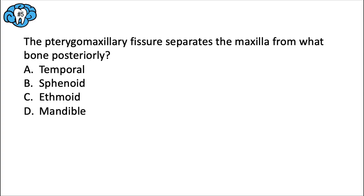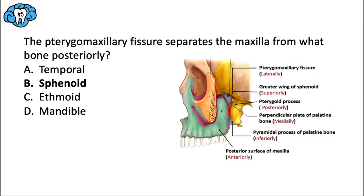Question five: the pterygomaxillary fissure separates the maxilla from what bone posteriorly? The pterygomaxillary fissure is that teardrop-shaped hole at the back of the maxilla above and behind the tuberosity. The name itself gives you the answer — the maxilla is in front and the pterygoid process is in the back. The bone that includes the pterygoid process and pterygoid plates is the sphenoid bone. You can see from the image that the sphenoid bone forms the posterior border of this fissure.